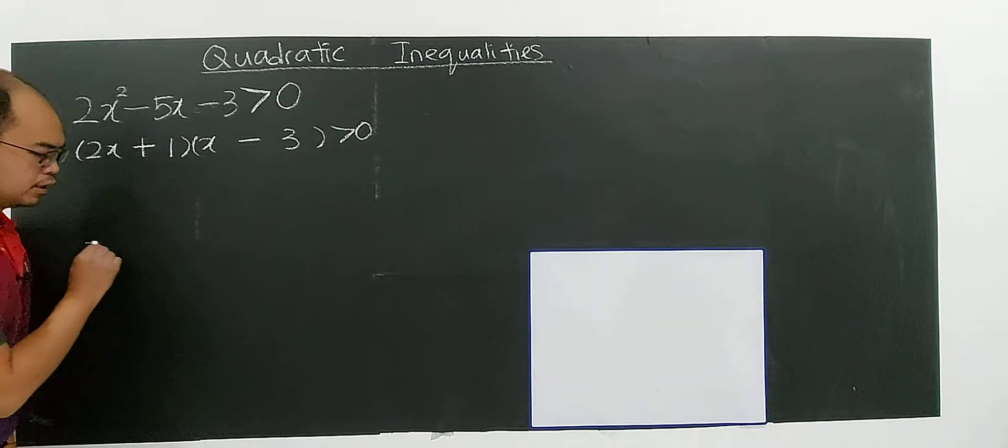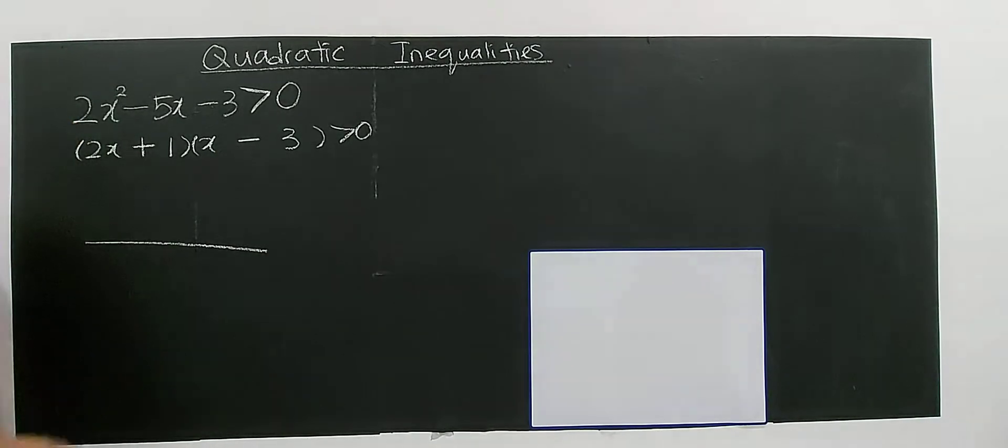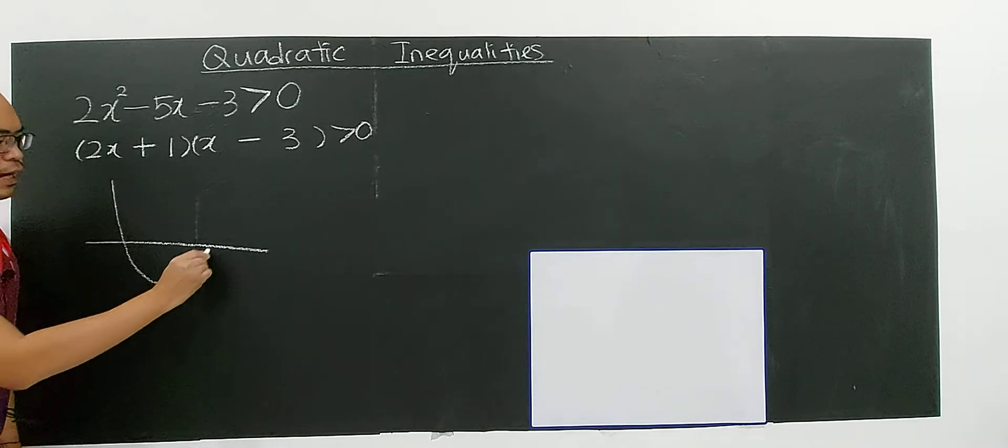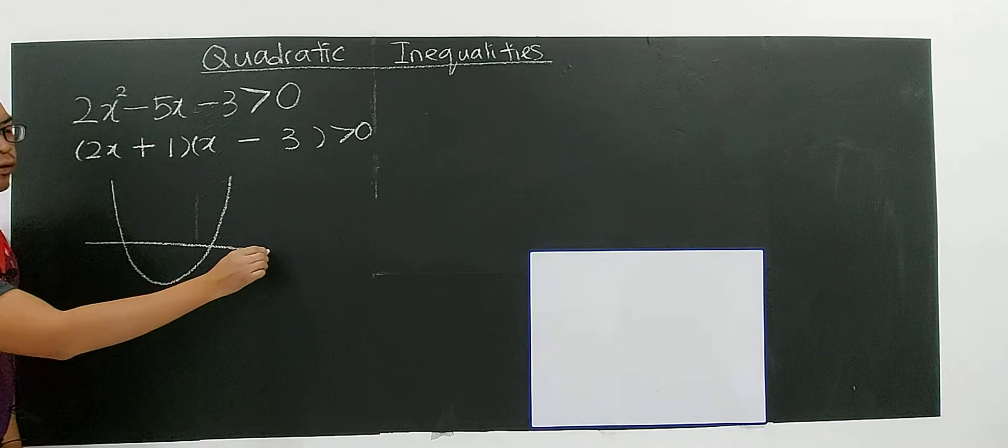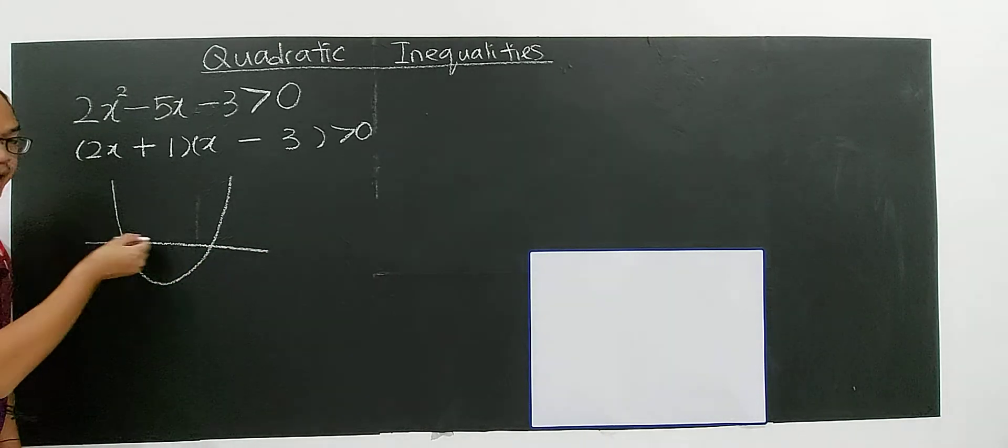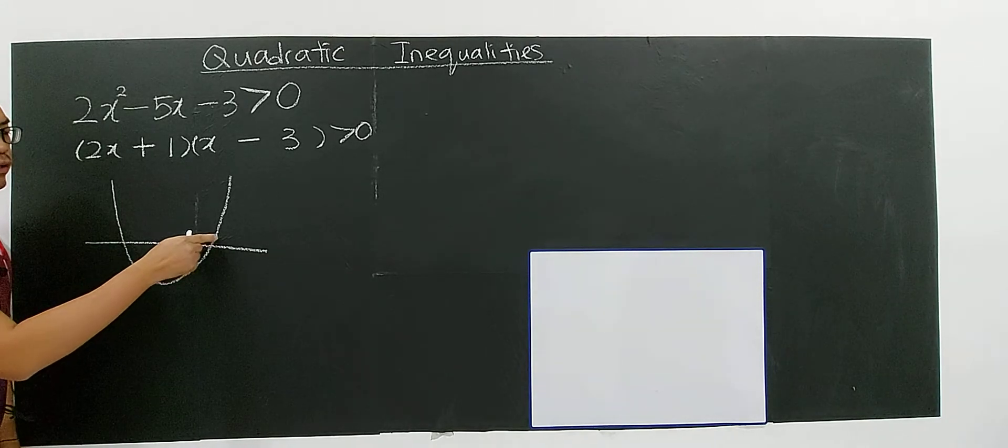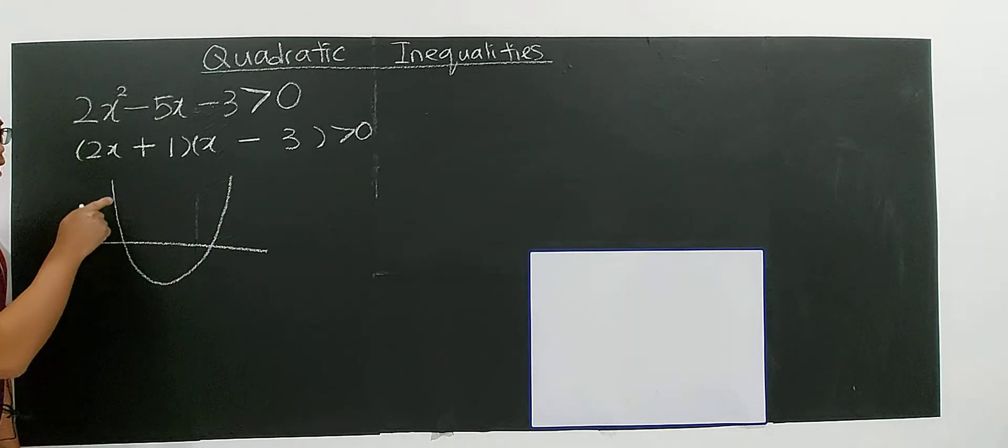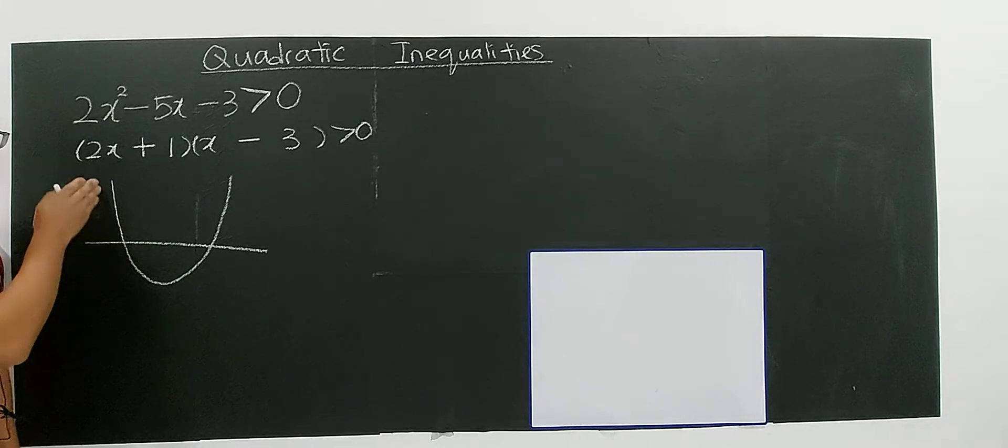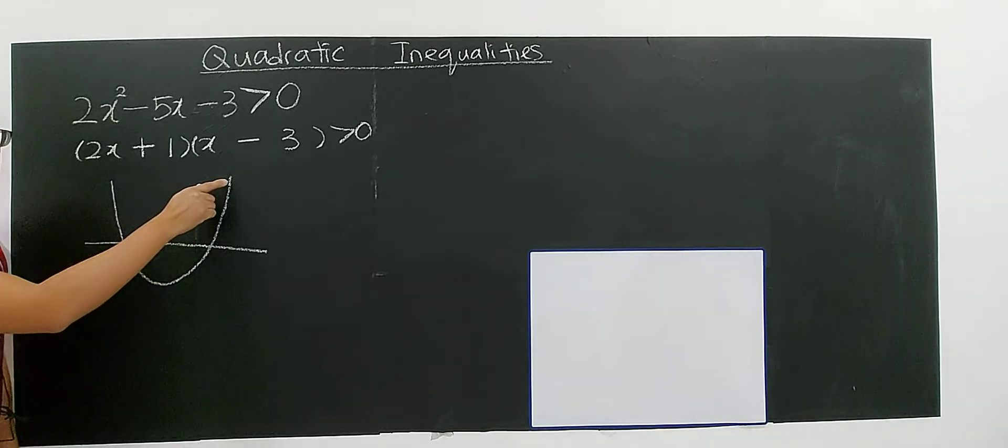So I will be using graphical approach, the quadratic graph, a quadratic graph which intersects the x-axis. This is actually your x-axis. This is x-axis. Any value, the y-value, the y-value above the x-axis will be positive.